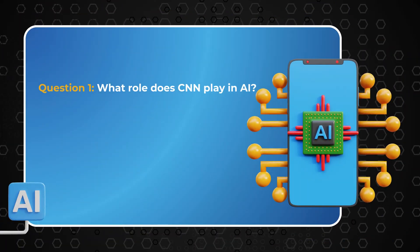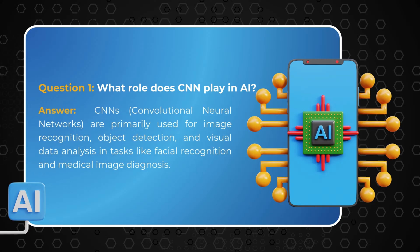Question 1: What role does CNN play in AI? Answer: CNNs, convolutional neural networks, are primarily used for image recognition, object detection, and visual data analysis in tasks like facial recognition and medical image diagnosis.